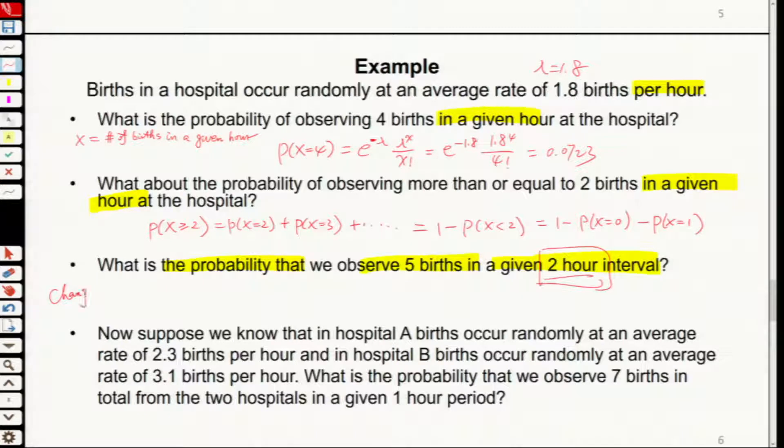If we're changing time intervals, this lambda, we will have 2 lambda. So now the new random variable will be Y. Y will be the number of births in a given 2 hour period.